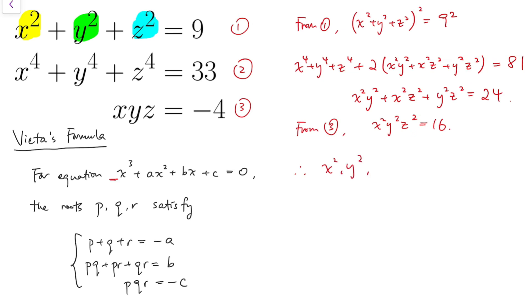Therefore, x squared, y squared, and z squared are roots to the equation a cubed minus 9a squared plus 24a minus 16 equals 0.